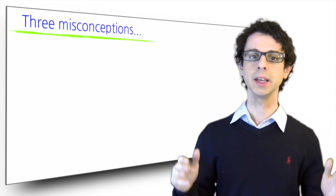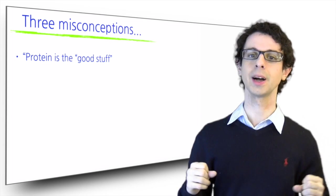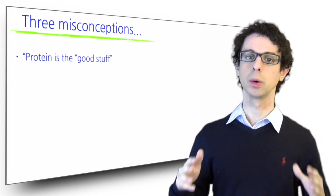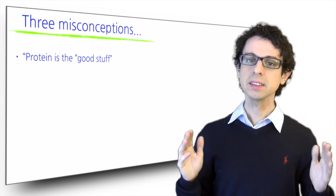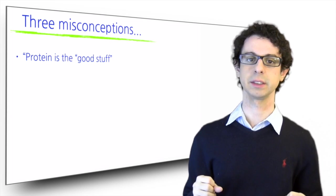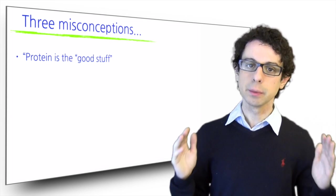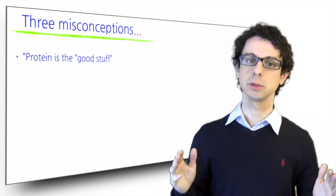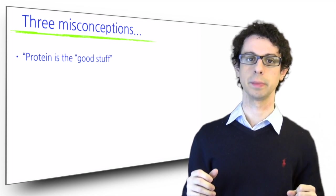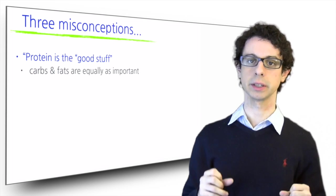The first one is that protein is the good stuff, sort of the reason why you eat, why you really should be looking for in food to grow and stay strong. This idea dates back to the origins of the science of nutrition in the 19th century when many scientists indeed believed that the reason we need to eat is to get proteins. But at this point in the course you already know better. You know, for example, that carbs and fats are equally as important.